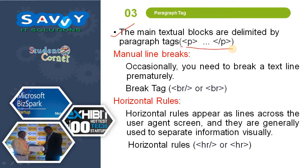The main text visual blocks are delimited by the paragraph tag. For a manual line break, occasionally you need to break a text line permanently using the break tag br — these are called non-pair tags. A horizontal rule hr gives a line across the entire page and is generally used to separate information.